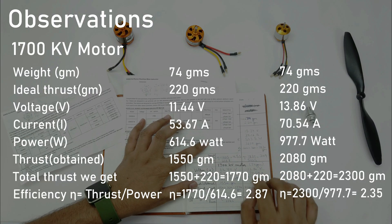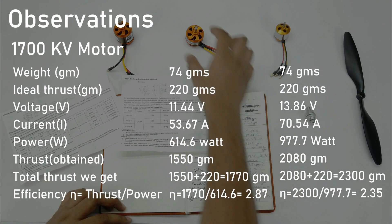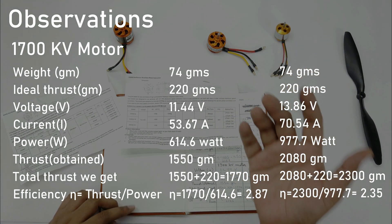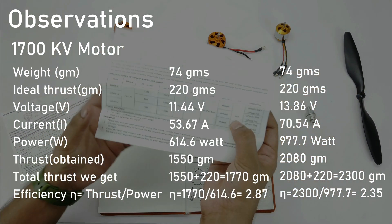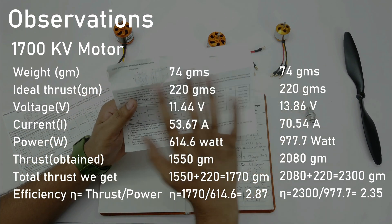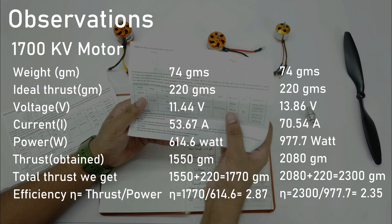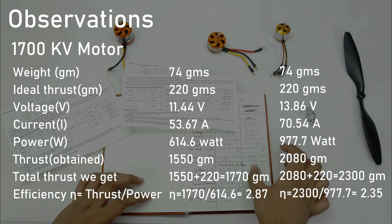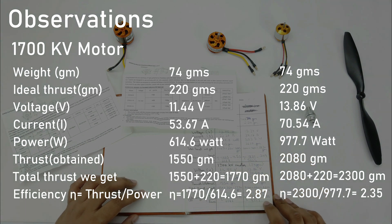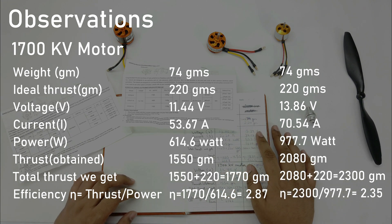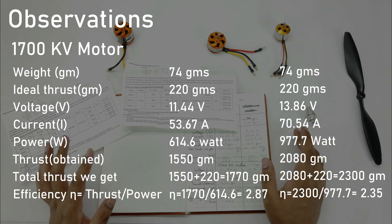It consumed 70.54 Amperes with 4S battery and produced 2080 grams which is quite a lot. That's why my 80 Ampere ESC could withstand it. You can see it is clearly mentioned to use 50 Ampere ESC for up to 9 inch propellers. If we go above it, it will draw more current than 50 Amperes. So in this case, it drew current of 70.54 Amperes. Here we got the efficiency of 2.35 in 4S battery and in 3S we got 2.87. So here our thrust test is completed.